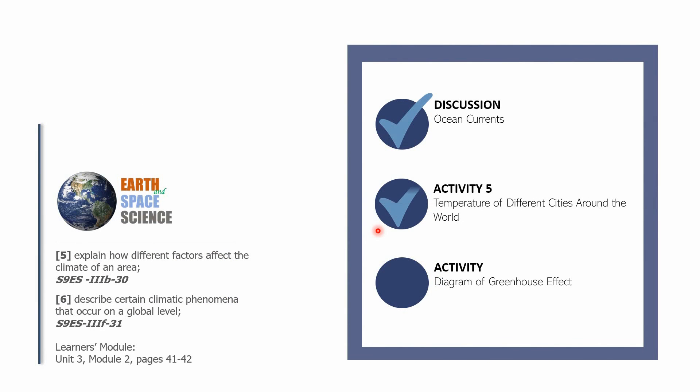First is discussion on ocean currents and Activity Number 5, which is temperature of different cities around the world, and diagram of greenhouse effect. Next time, you can expect that the only learning competency we'll be finishing in earth and space science for climate and weather will be Learning Competency Number 6: Describing certain climatic phenomena that occur on a global level. This is Cersei-Jayman Lapids, and I hope that you learned something in this session of the Earth and Space Science series of the Knowledge Catalog. I am hoping to see you in the next video lesson.